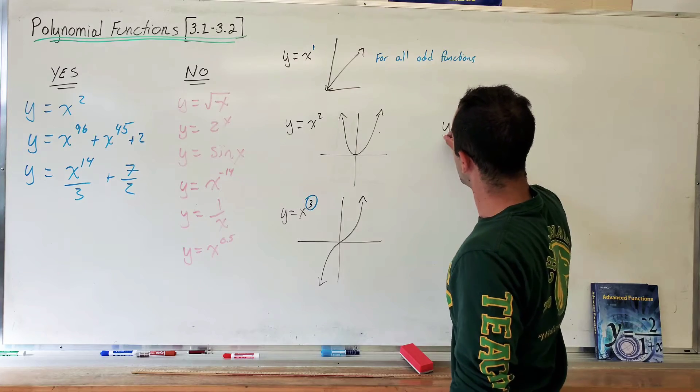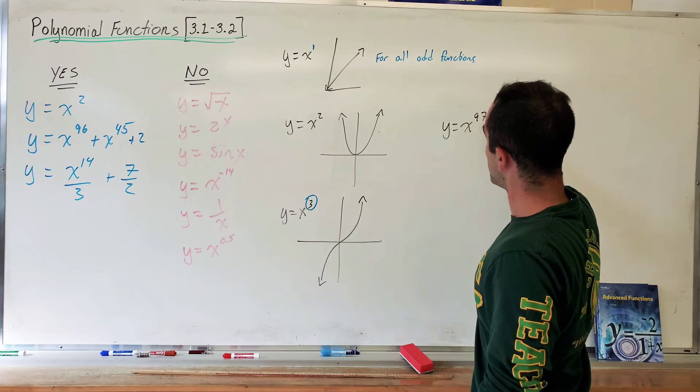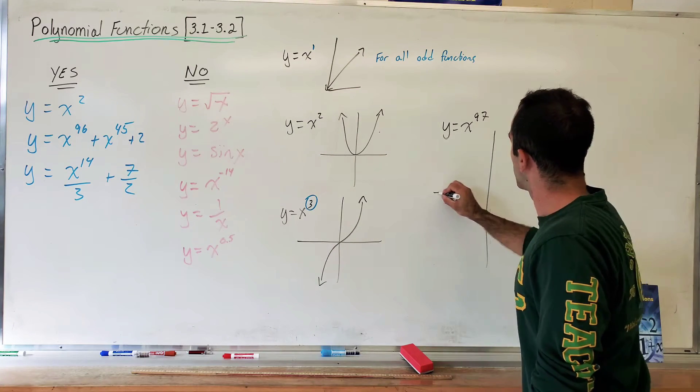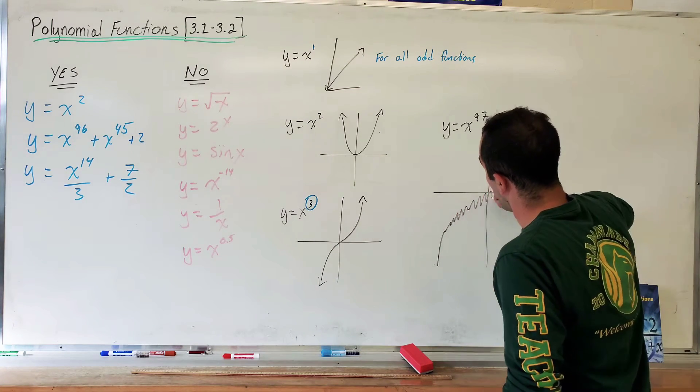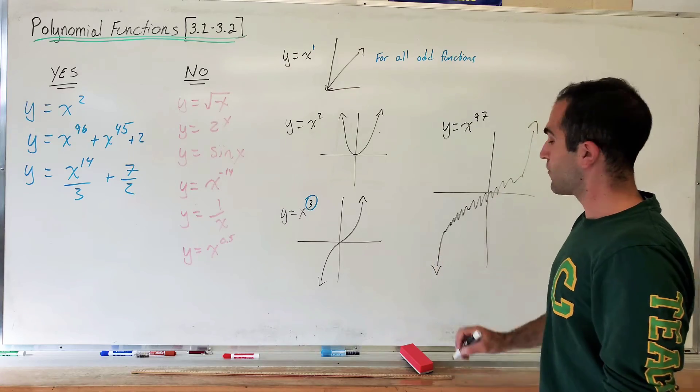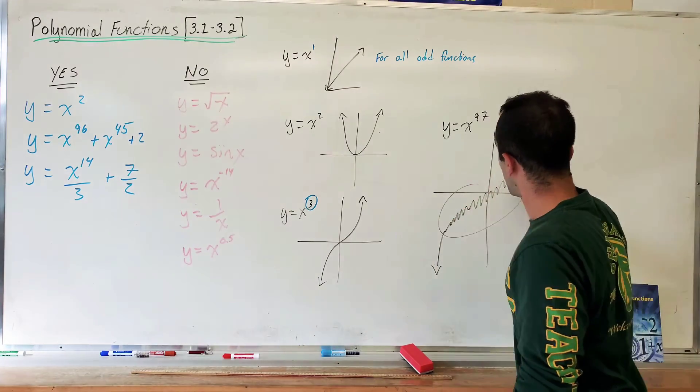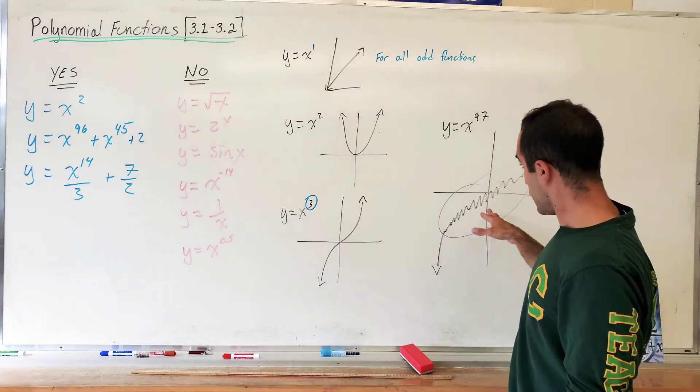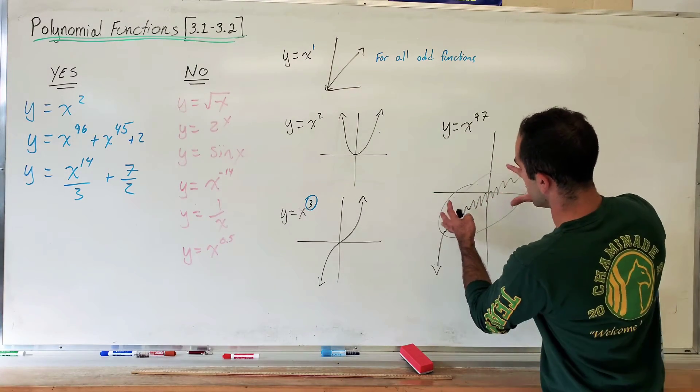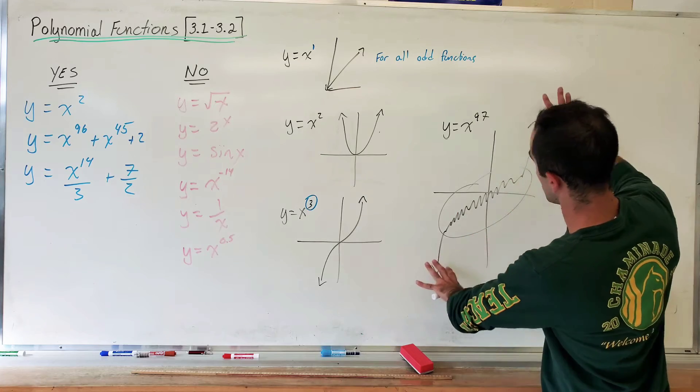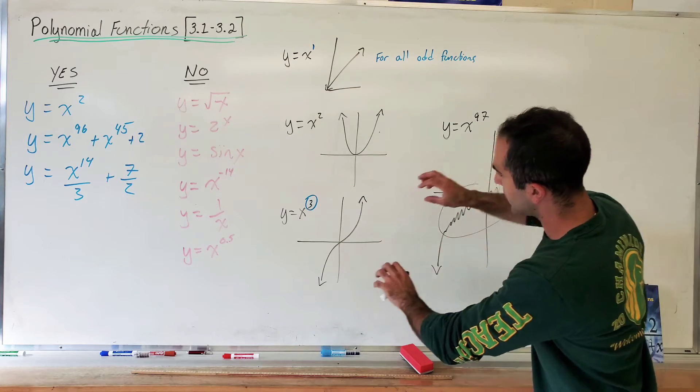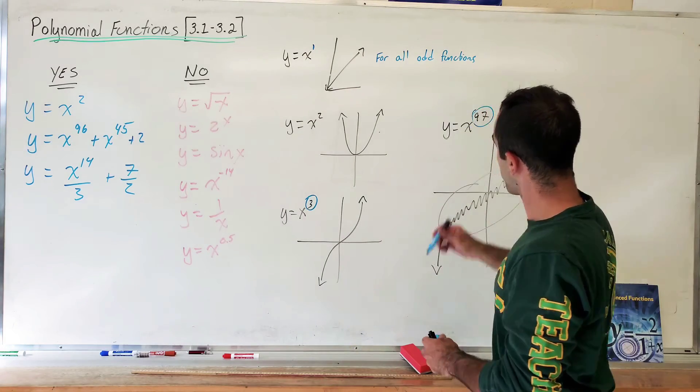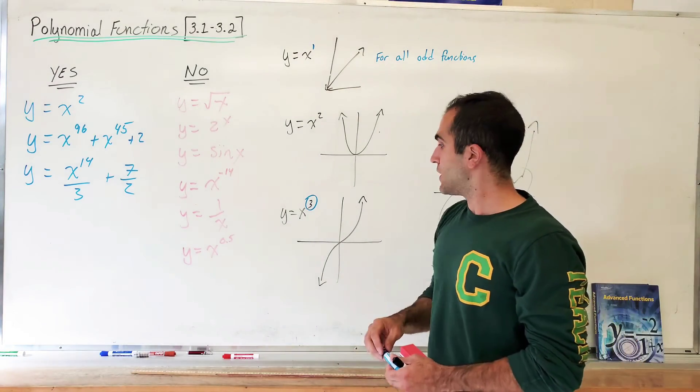You know how y equals x to the 97 looks like-ish? Not really, but ish. Starts here. Some stuff happens here and it goes up here. Okay? So we don't care about this stuff. That's not how it looks like. But it could get complicated to look like this. What I'm saying is, this is not what we're interested in right now. We're interested in those guys. And those guys are the same for every odd exponent. Okay? The end behaviors are key.